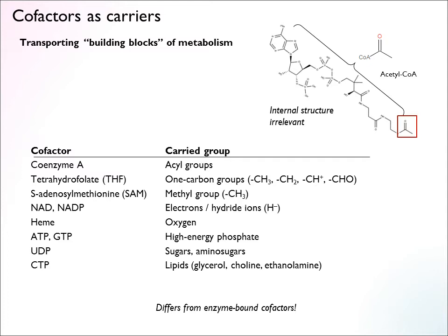Coenzyme A is a well-known carrier, but there are many others in metabolism. You can think of these as specialized molecules that carry specific building blocks. Coenzyme A carries two-carbon acyl groups. Folate — tetrahydrofolate in its active form — carries one-carbon groups in different oxidation states: methyl groups, formyl groups, and similar. S-adenosylmethionine, or SAM, is another carrier that can carry methyl groups, active in somewhat different pathways.